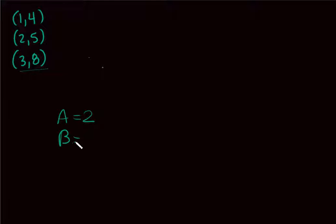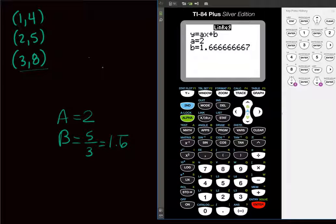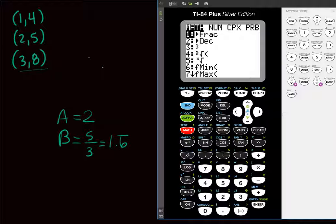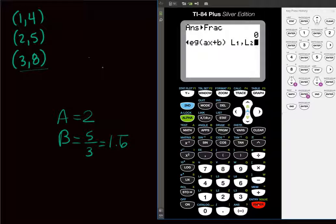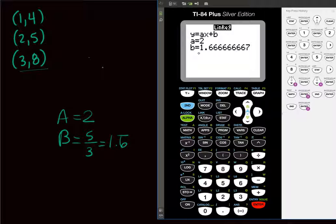We can see that a = 2 and b = 1.6667, which is exactly 5/3 — matching what we got by hand. If an answer looks like it might be a nice fraction, try to recognize it. If it doesn't look like a nice fraction, leaving it as a decimal to three or four decimal places is fine. The calculator is much, much easier.